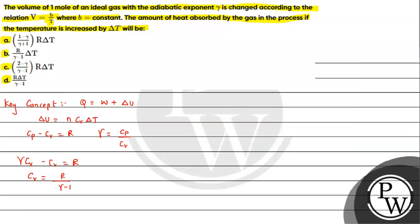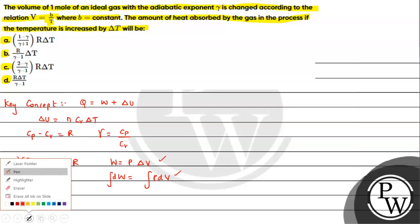These are the basic points we need to keep in mind. Additionally, for a gaseous system the thermodynamic work done is given by P delta V for constant pressure, and for a variable pressure system the work done is given by the integration of P dV. These are the key results we will use to analyze the question.